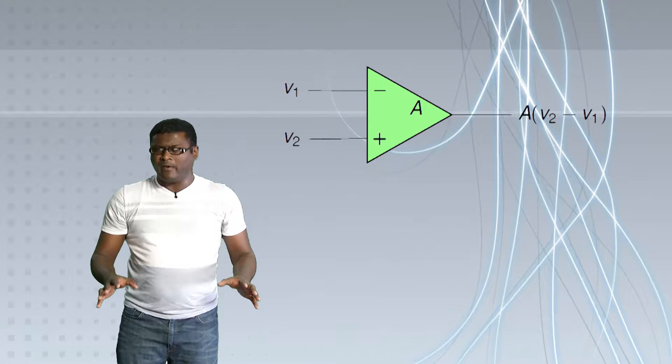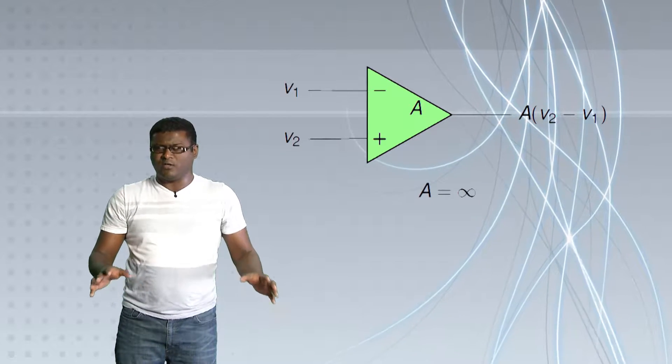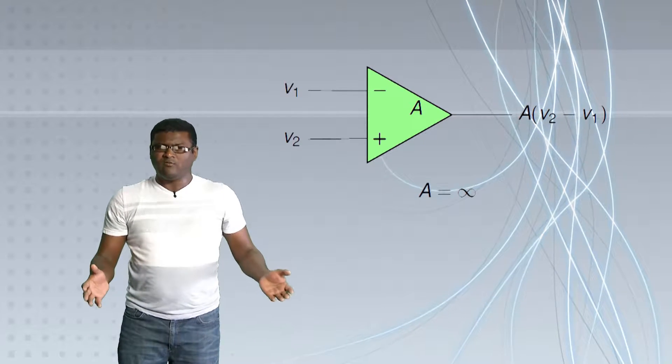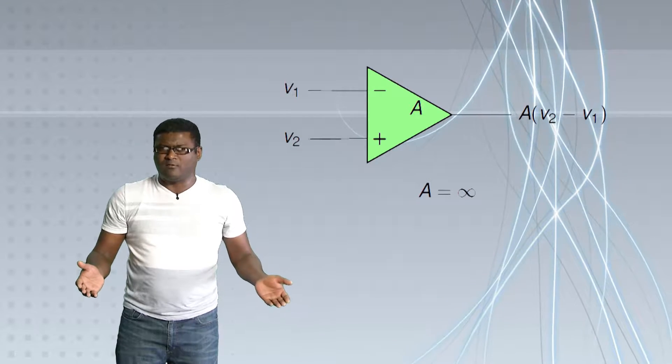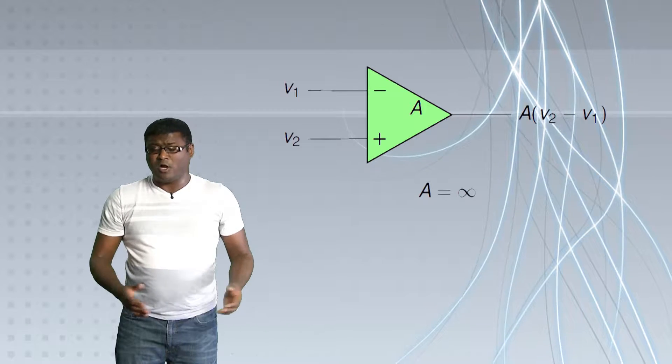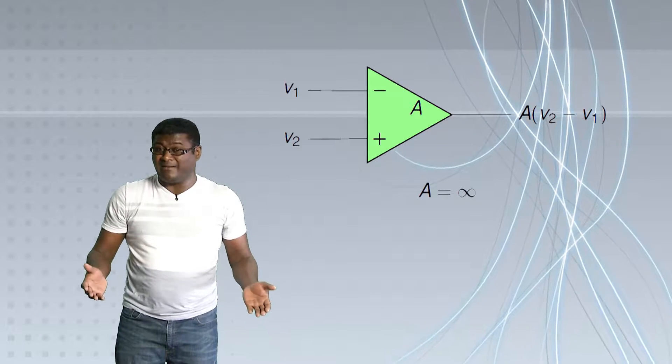Now, an ideal op amp has an infinite gain. That means A is equal to infinity. Now, you might be wondering, what would an infinite gain amplifier possibly do? Wouldn't it corrupt all the signals to infinity? And more importantly, how would you get an infinite gain? Is it really practically possible?